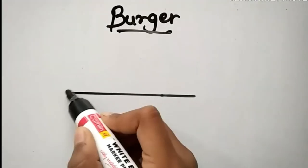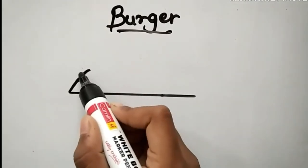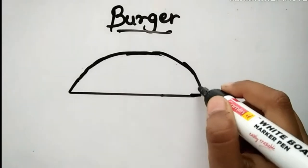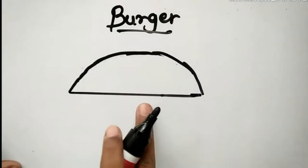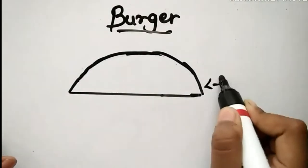And now we have to draw a semicircle for the bun. It's pretty cool. It's just like a bun.